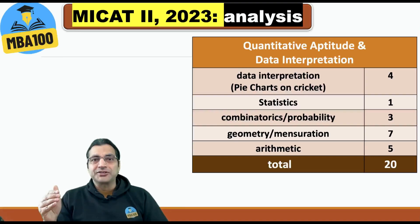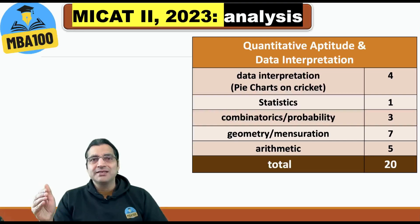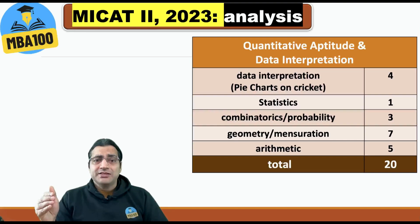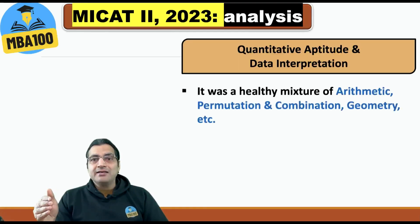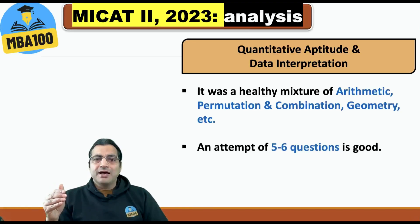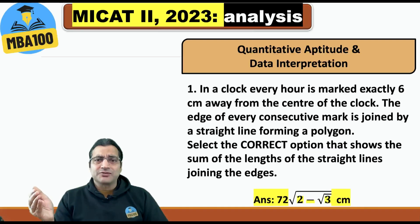Quantitative aptitude and data interpretation: bar charts on cricket — 4 questions, statistics — 1, combinatorics and probability — 3, geometry and mensuration — 7, arithmetic — 5, totaling 20 questions. It was a healthy mixture of arithmetic, permutation, combination, and geometry. An attempt of five to six questions is quite good in our opinion.